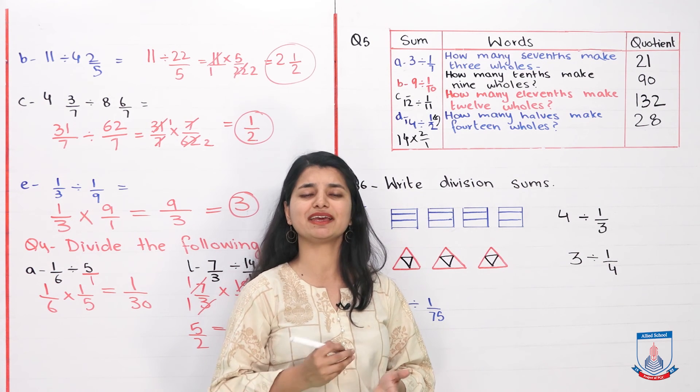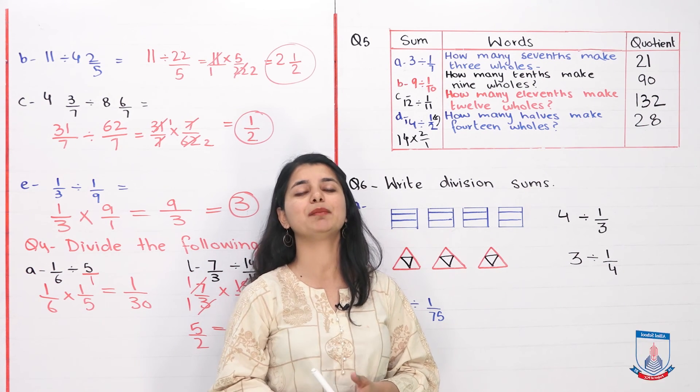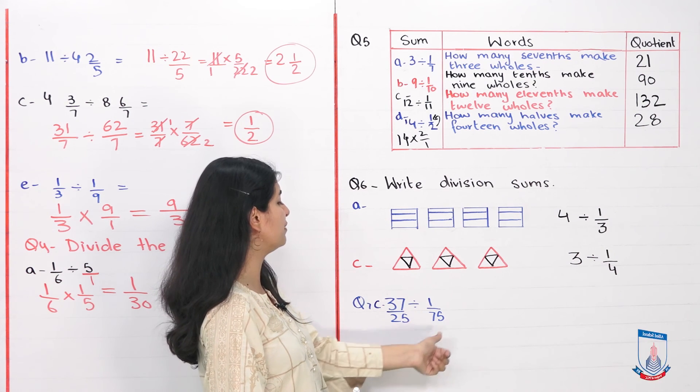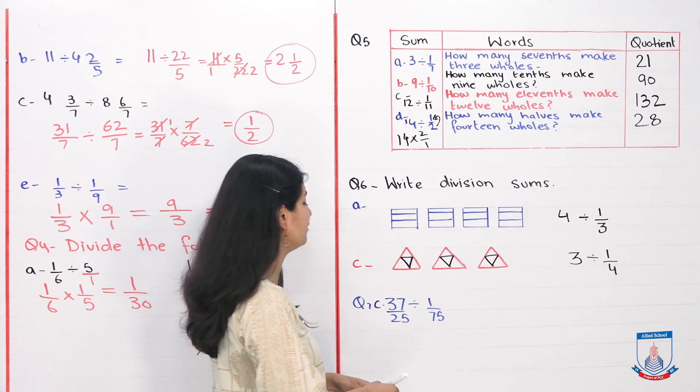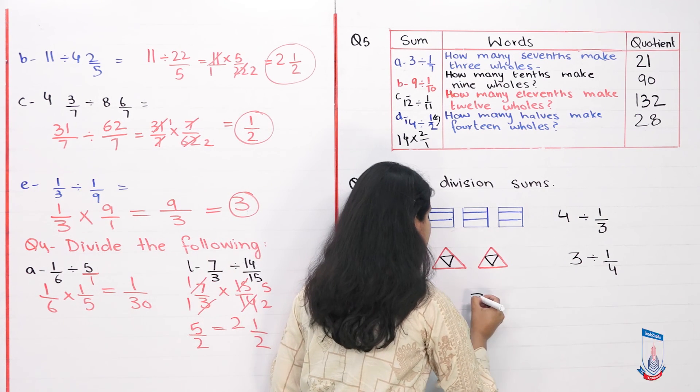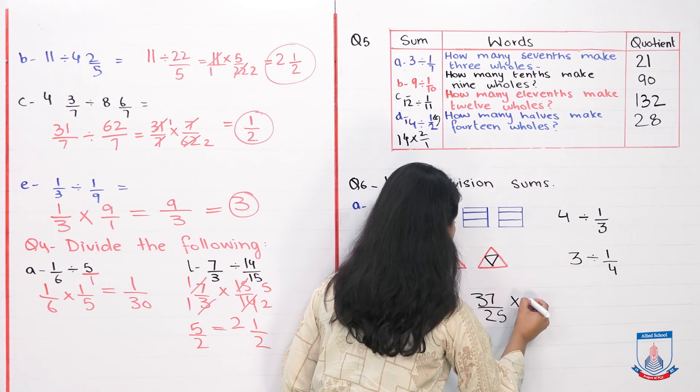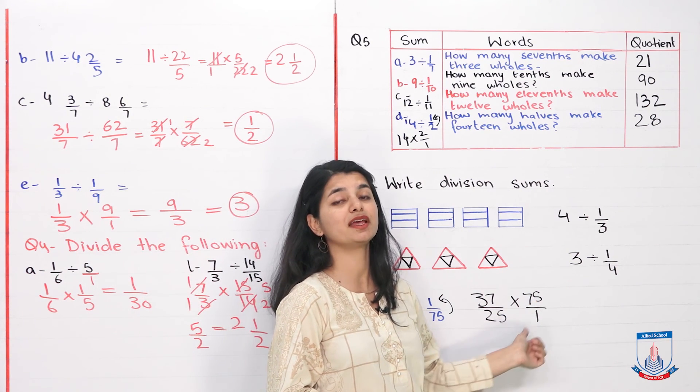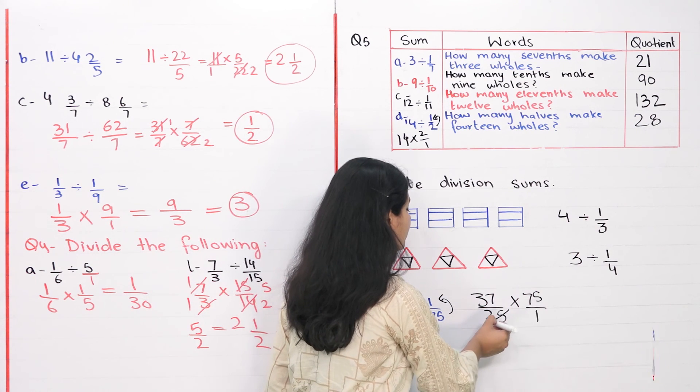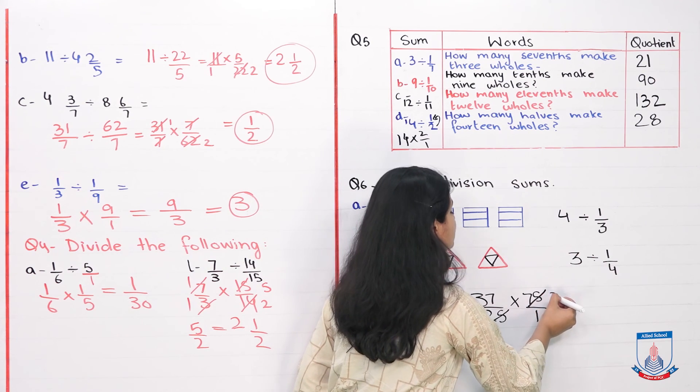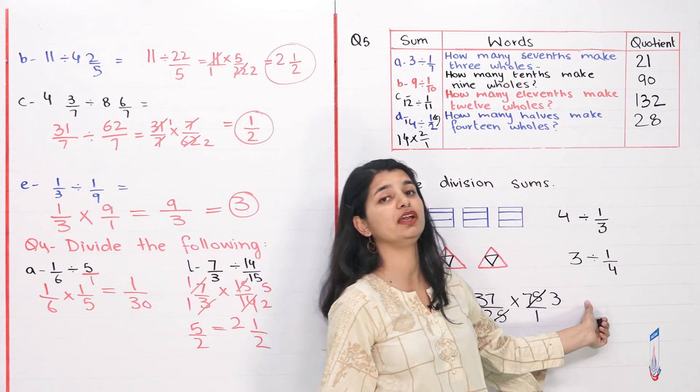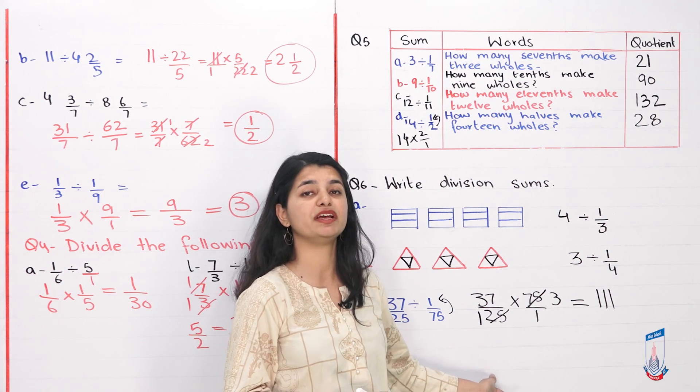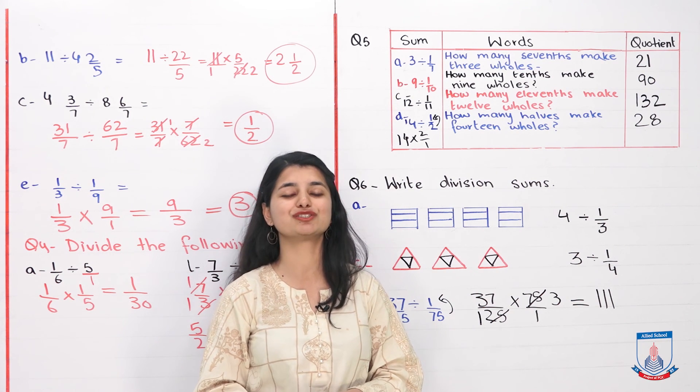Now let's see question number seven. We'll do one example and with that all our practice and exercise on division of fractions will be complete. Question number seven is 37 over 25 divided by one over 75. Take its inverse. So 37 over 25 into 75 over one. Now what's the method? These two can cancel out. Both divide by 25. Here 25 divided by 25 is one. 75 divided by 25 is three. So you're left with 37 into three. When you solve it, the answer is one hundred and eleven. This way you have to solve the remaining parts in this question: take the reciprocal, multiply, and solve your questions.